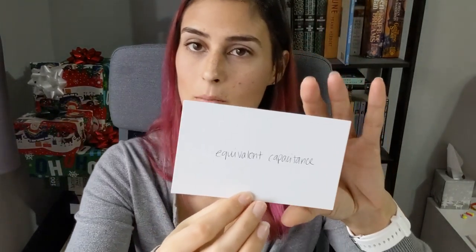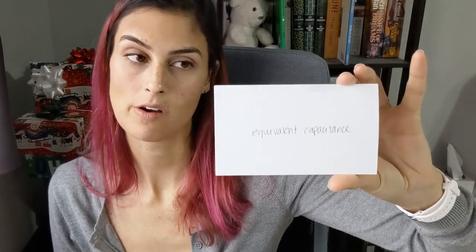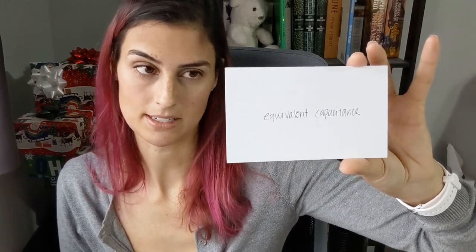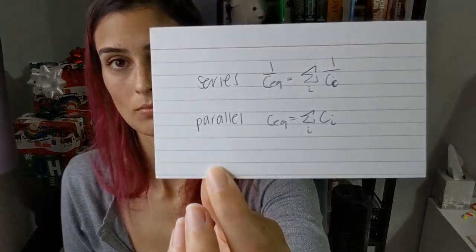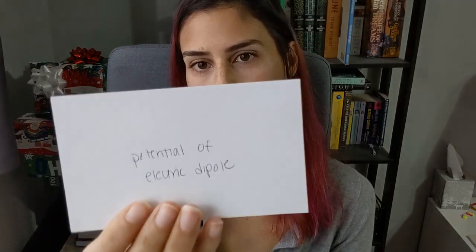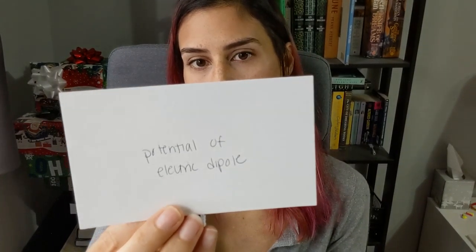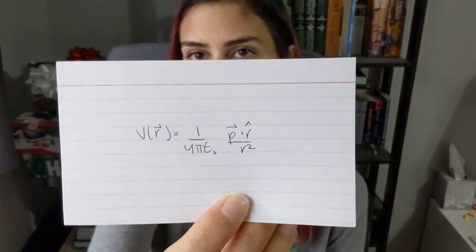Equivalent capacitance: in series, one over the equivalent capacitance equals the sum of one over the individual capacitances; in parallel, the equivalent capacitance equals the sum of the individual capacitances — the opposite of inductors and resistors. The potential of an electric dipole: V of r equals 1 over 4 pi epsilon naught times p dot r-hat over r squared, where p is the dipole vector.